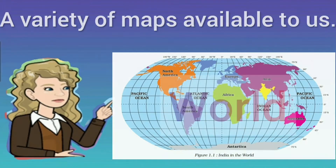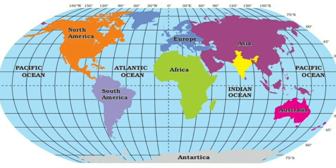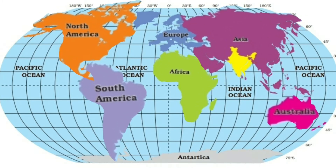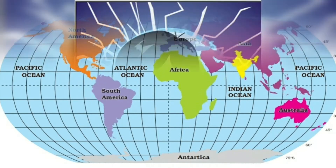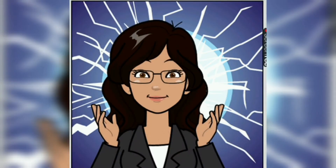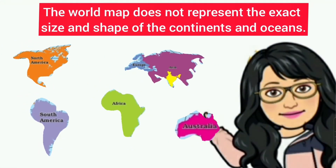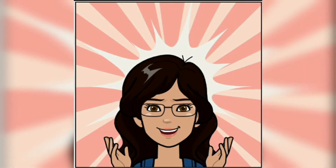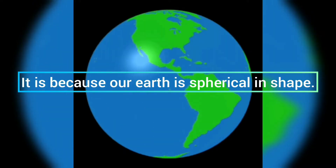You must have seen a world map — it gives us information about all the continents and oceans, but not in their accurate shapes and sizes. This is true: the world map does not represent the exact size and shape of the continents and oceans. Can you think of the reason behind it? It is because our earth is spherical in shape.